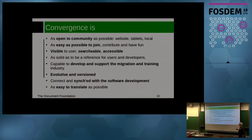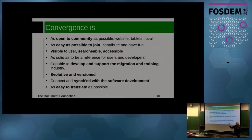It has to be a good reference for users and developers, capable of supporting the migration and training industry. It also has to be evolutive across versions, keeping the same pace as the software and staying synchronized with it, and as easy to translate as possible. In LibreOffice and Apache OpenOffice, the help is connected to a translation server, and we have as many as 50 languages actively translated.